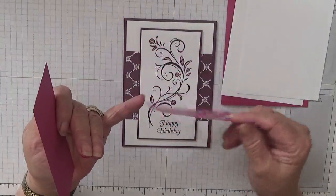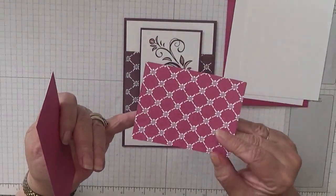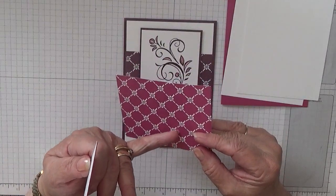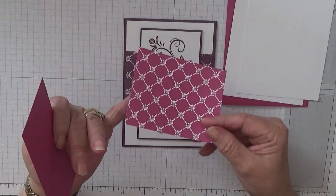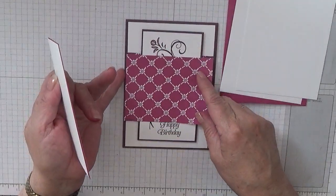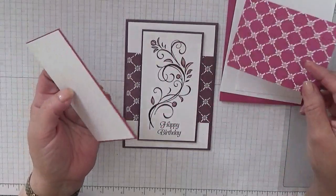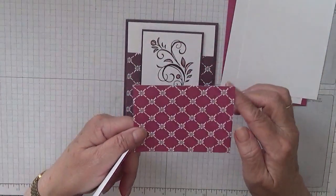A piece of designer series paper, and this is from when these ink colors came out in 2017. This paper came with it and I've still got those left, so I thought I'd use it. This is 3 and seven-eighths by 3 inches.